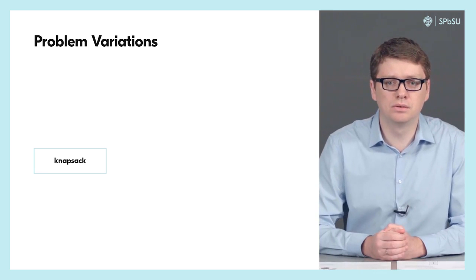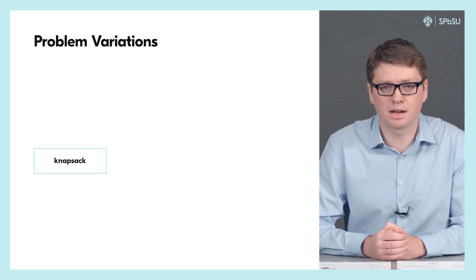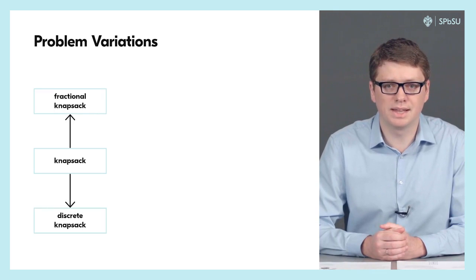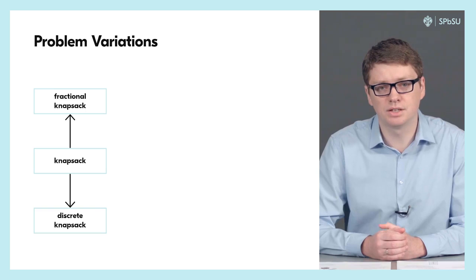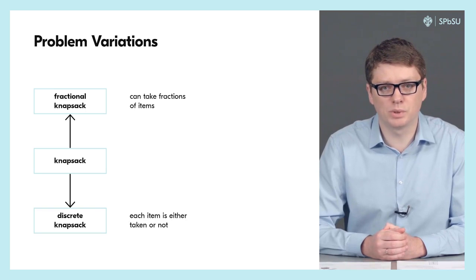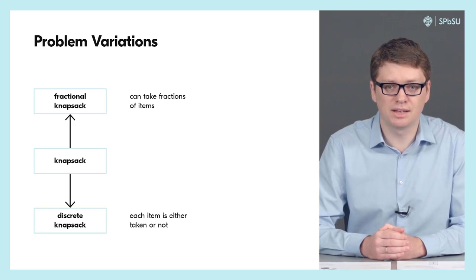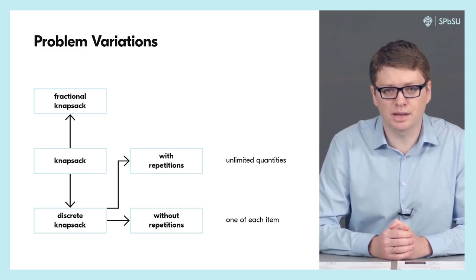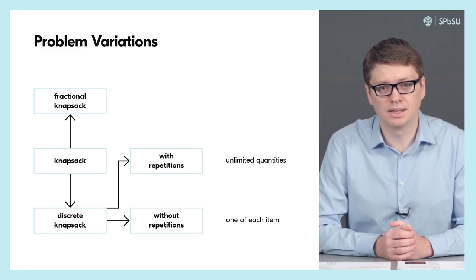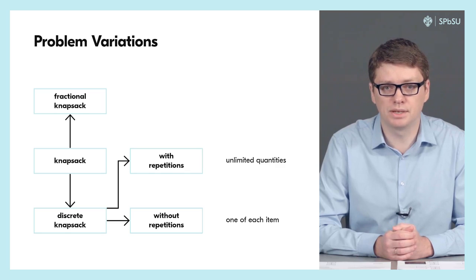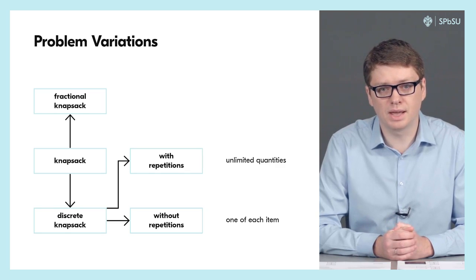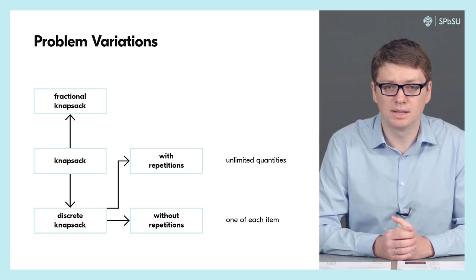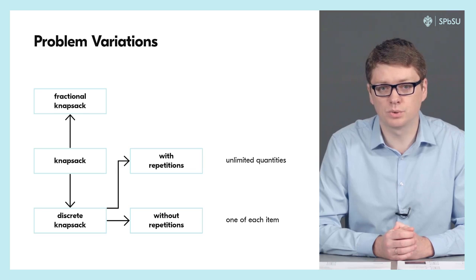There are two natural variations of the knapsack problem. First, the knapsack may be either fractional or discrete. In the fractional version we assume that we can take any fraction of any item. On the other hand, in the discrete case each item is either taken or not. For the discrete knapsack there are two further variants: knapsack with repetitions or knapsack without repetitions. In the first case we are allowed to take any number of any items; in the second case we are allowed to take only a single copy of each item.